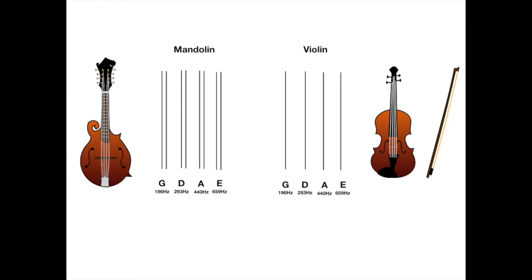The G-D-A-E tuning means the strings are tuned to fifths. In really general terms, it means that each string is five notes higher than the one below it. So D is five notes higher than G, A is five notes higher than D, etc.